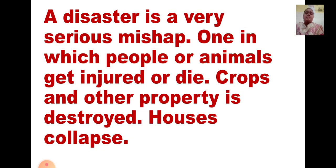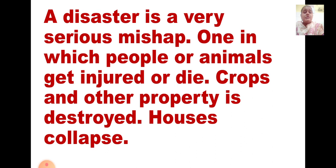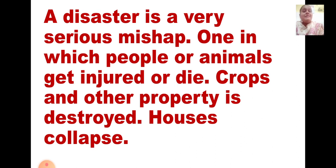A disaster is a very serious mishap — very, very dangerous — in which people, animals, and plants get injured. Crops and other property are destroyed. Fields, trees, and plants are all affected. Houses collapse and people lose their house. It is a very sad thing. So it should not happen to any one of us; we should take care of the environment.